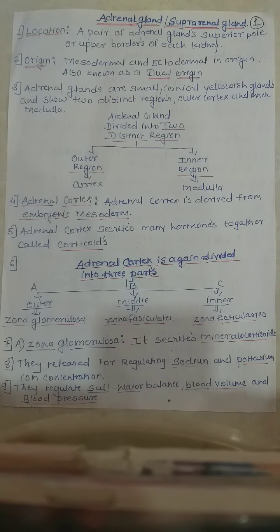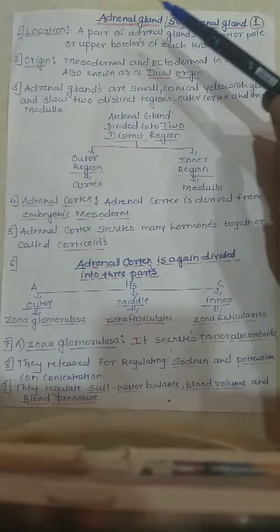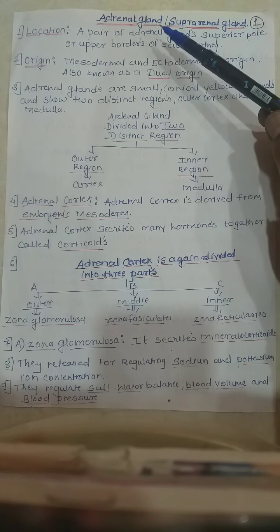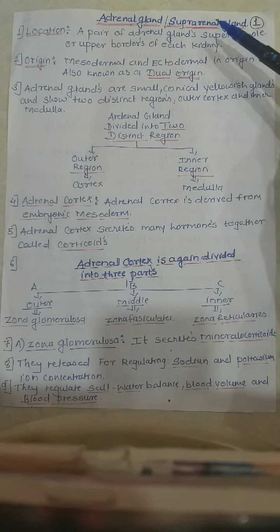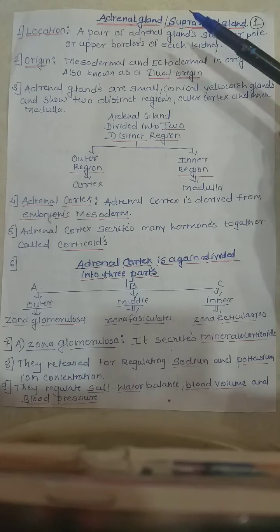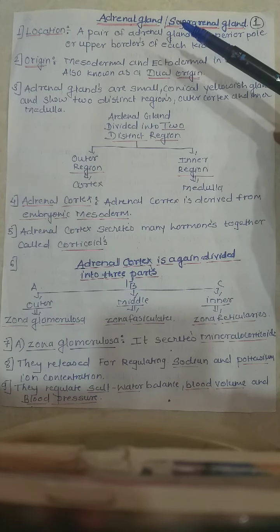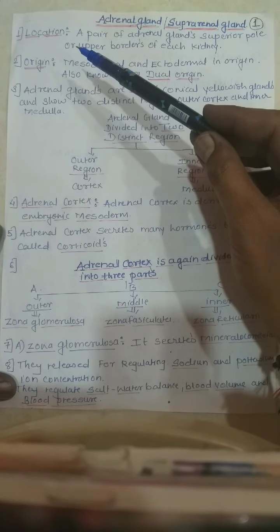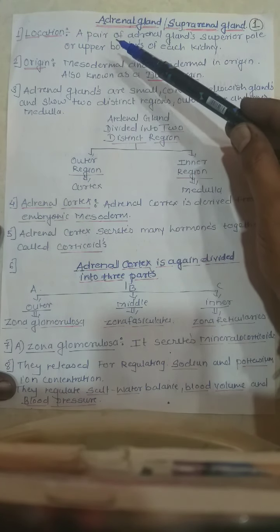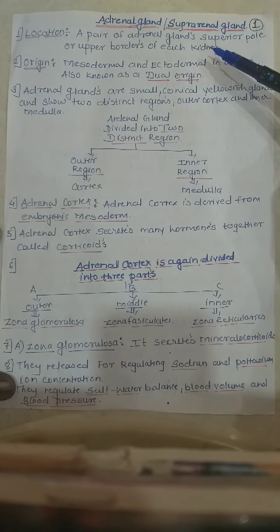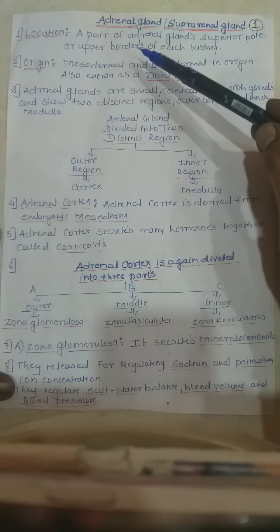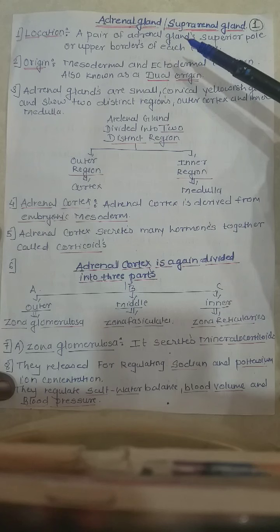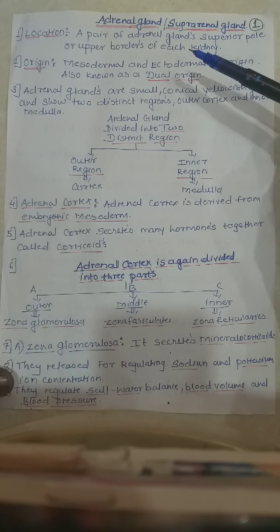Hi friends, myself Sainat Lombade and today we are going to discuss about the adrenal gland. The another name for the adrenal gland is suprarenal gland. Supra means this gland is present at the superior part of the kidneys. A pair of adrenal glands is located at the superior pole or upper border of each kidney.